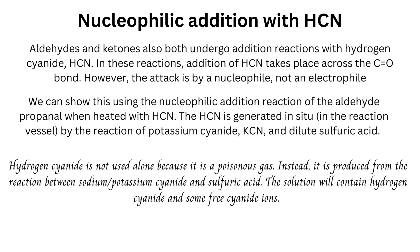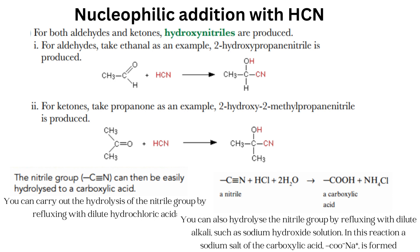Nucleophilic addition with HCN: aldehydes and ketones both undergo addition reactions with hydrogen cyanide, where HCN adds across the C=O bond via nucleophilic attack. HCN is generated in situ by the reaction of potassium cyanide (KCN) and dilute sulfuric acid, since hydrogen cyanide is a poisonous gas. The solution contains HCN and free cyanide ions. Hydroxynitriles are produced for both aldehydes and ketones. For example, ethanal gives 2-hydroxypropanenitrile, and propanone gives 2-hydroxy-2-methylpropanenitrile.